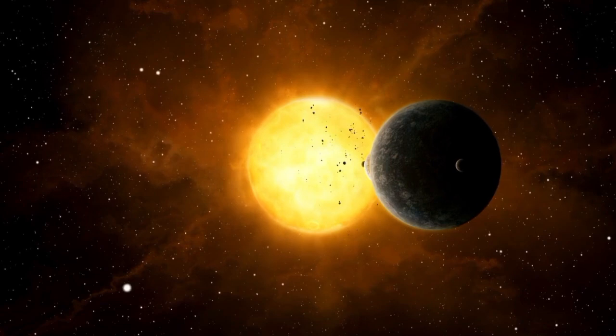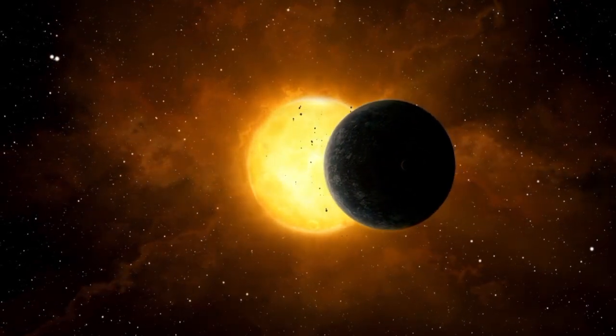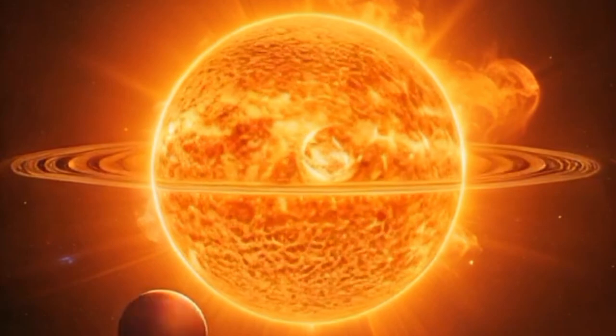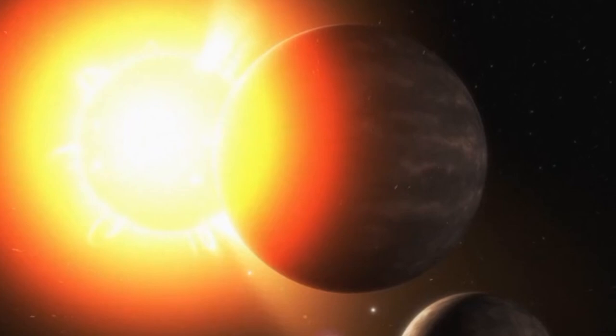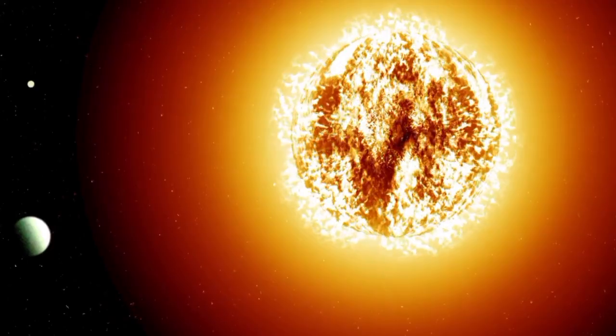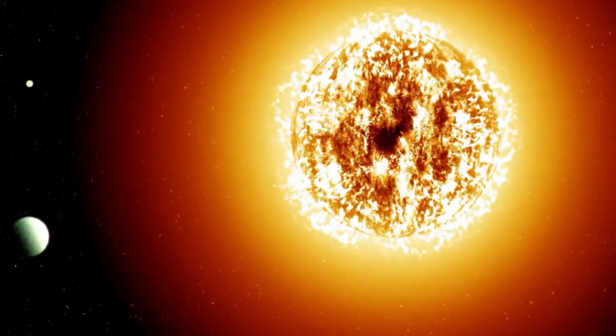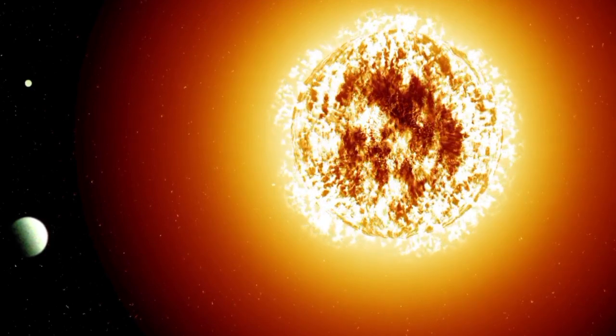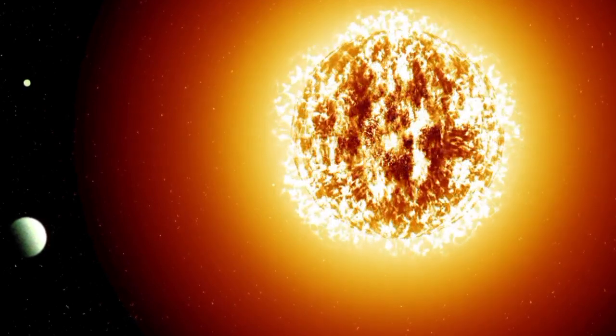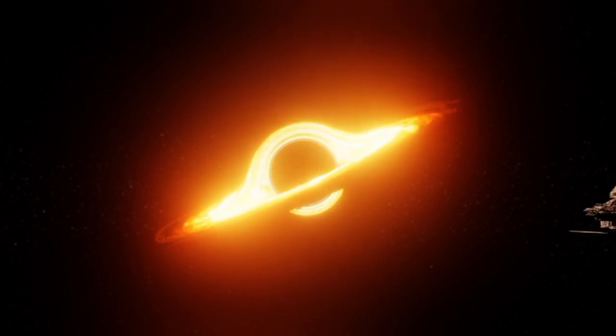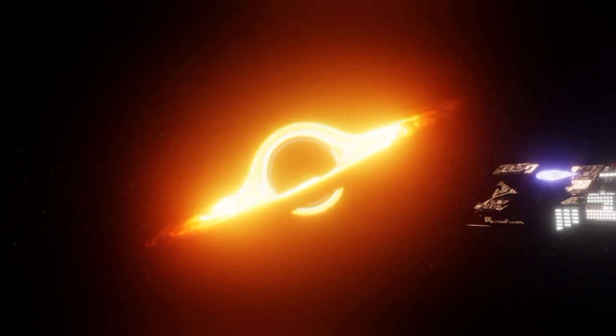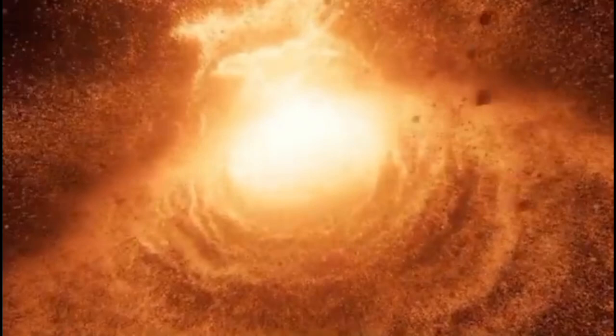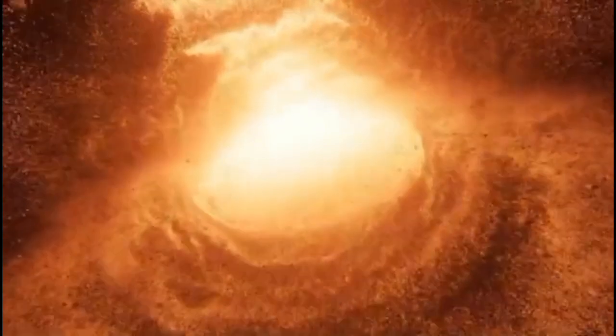Although many people are unaware of it, it is possible to identify Betelgeuse in the night sky during the winter months in the Northern Hemisphere. Just look up at the sky and focus on the constellations Orion and Canis Major to see this dazzling star in all its splendor. The reddish orange star is easy to find. It marks the upper left corner of the rectangular shape of the constellation. The star is one of the largest and brightest in the night sky, making it difficult to miss.